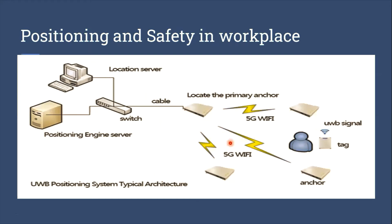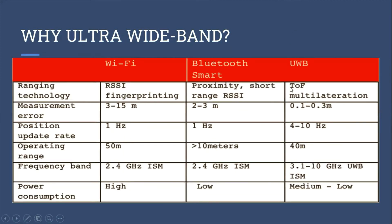This slide shows the UWB positioning system's typical architecture, found in Nanjing Roju Wireless Company Limited. This architecture is widely used in chemical plants. UWB leverages time of flight, which is a method for measuring distance between two radio transceivers. By time of flight: distance equals signal time multiplied by the speed of light.